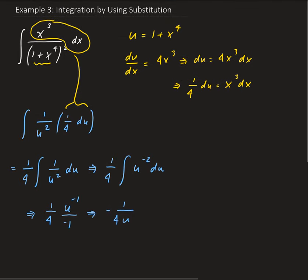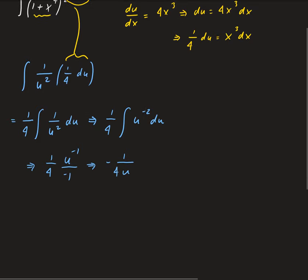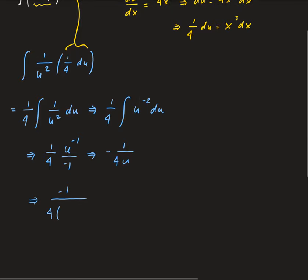So then we go ahead and replace u with 1 plus x to the fourth. So we have minus 1 divided by 4 times 1 plus x to the fourth.